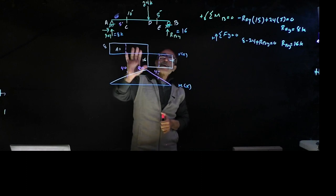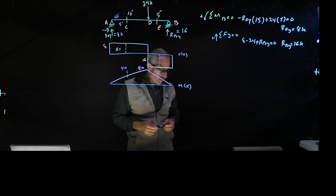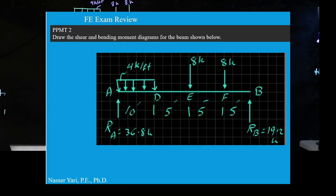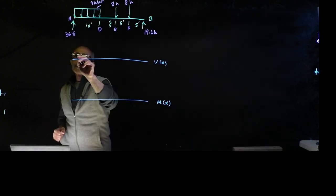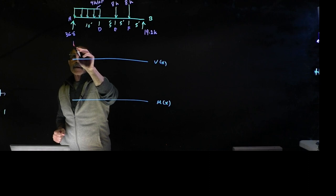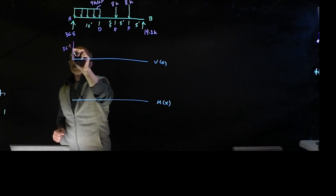The second problem is a simply supported beam where the reactions are given, so you don't have to calculate them. Just go ahead and draw the shear moment diagram. Starting by going up 36.8 at the left support.